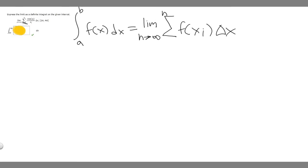To solve this problem and write it as a definite integral, you need to know this formula. The definite integral from a to b of f(x)dx equals the limit as n approaches infinity of the sum of f(x_i) times delta x. You need to recognize that